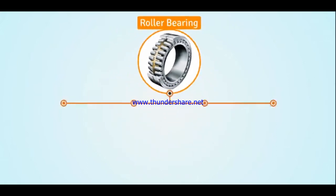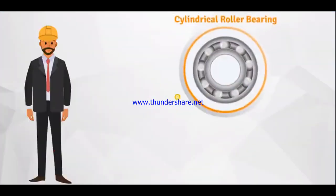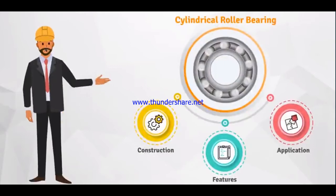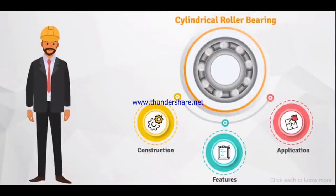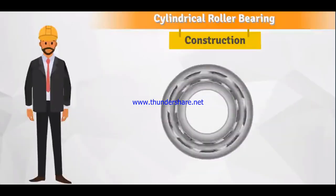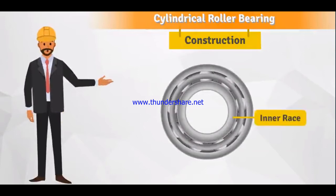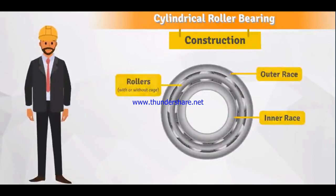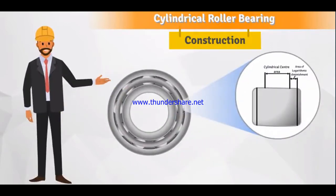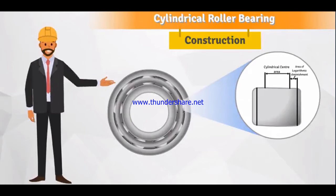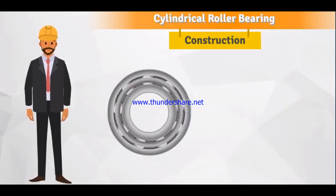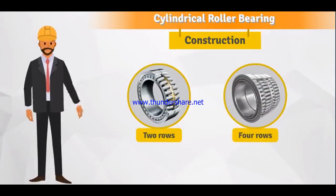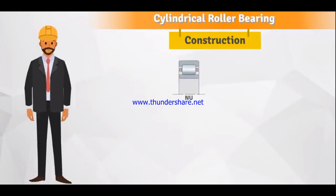A cylindrical roller bearing has inner race, outer race, and rollers with or without cage. Its rollers are not true cylinders but are of logarithmic profile and ground.